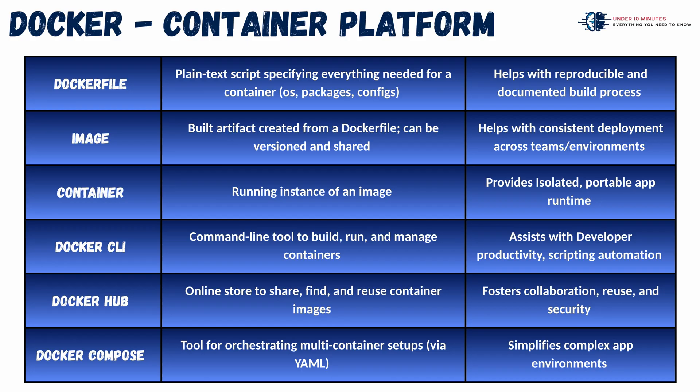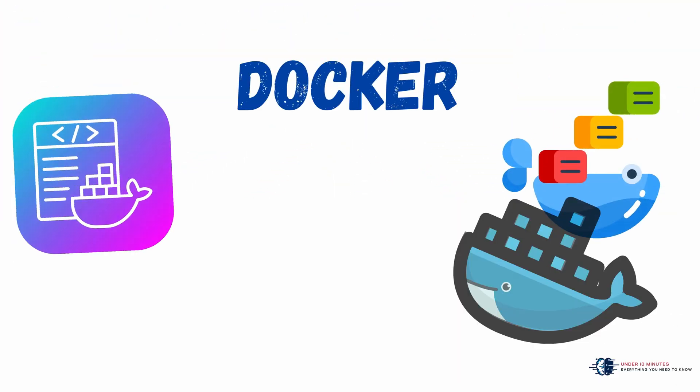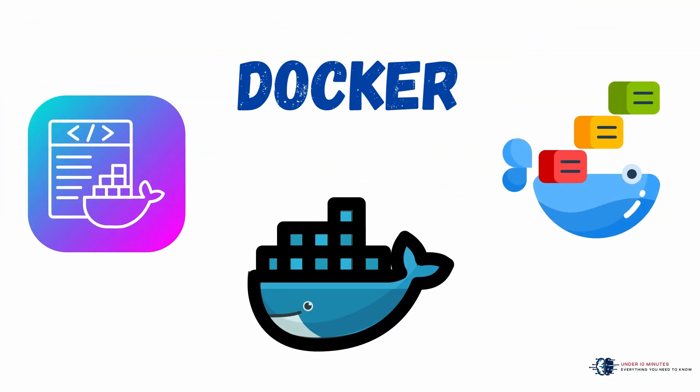Each image built from a Dockerfile could be moved intactly between developers and production. With simple Docker CLI commands, spinning up, stopping, or inspecting containers became routine, even for complex setups. Docker Hub made sharing these images as easy as app stores for mobile phones. And with Docker Compose, managing interconnected services like web servers and databases together took just a single configuration file. Docker didn't just package your app — it brought containers into the mainstream developer's toolbox.